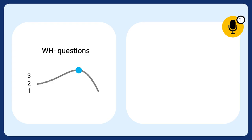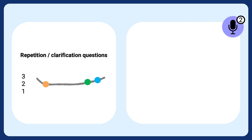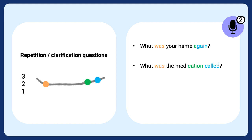Check out these uses of intonation when asking questions. We ask wh-questions with a rising and then falling intonation, like 'What's your name?', 'What's the medication?', 'When's your operation?', 'How do you spell it?' If you're asking for repetition or clarification, we use slightly rising intonation: 'What was your name again?', 'What was the medication called?', 'When did you say the operation was?', 'Who is that again?'